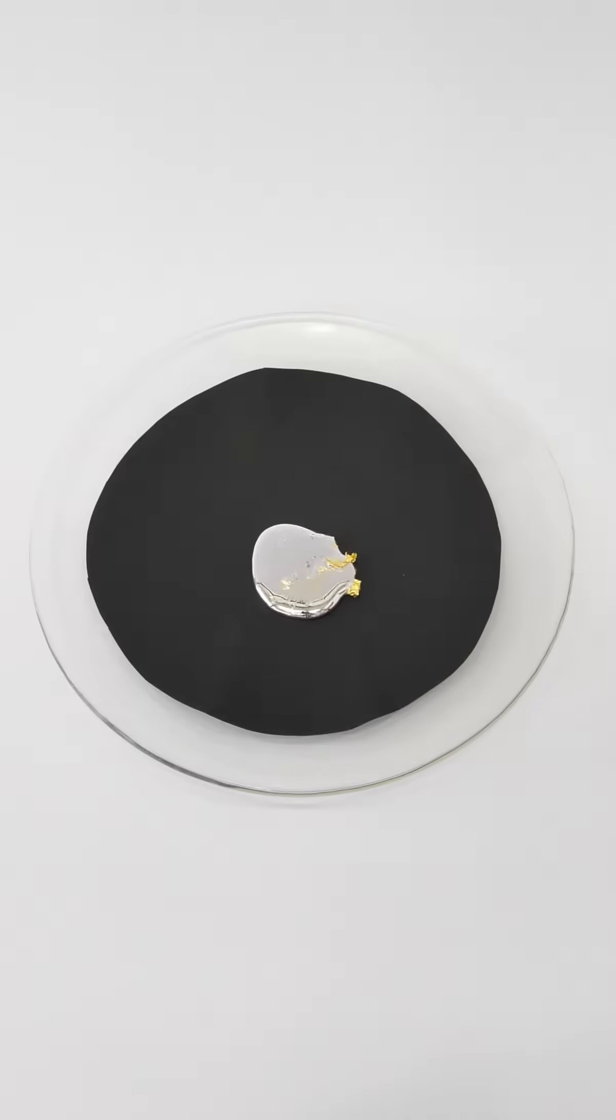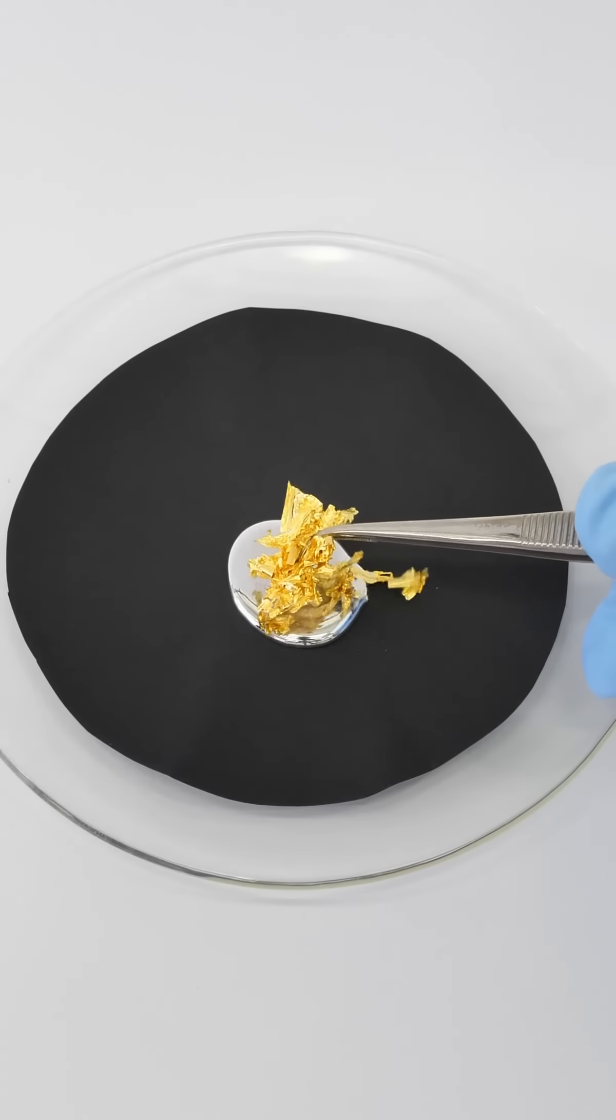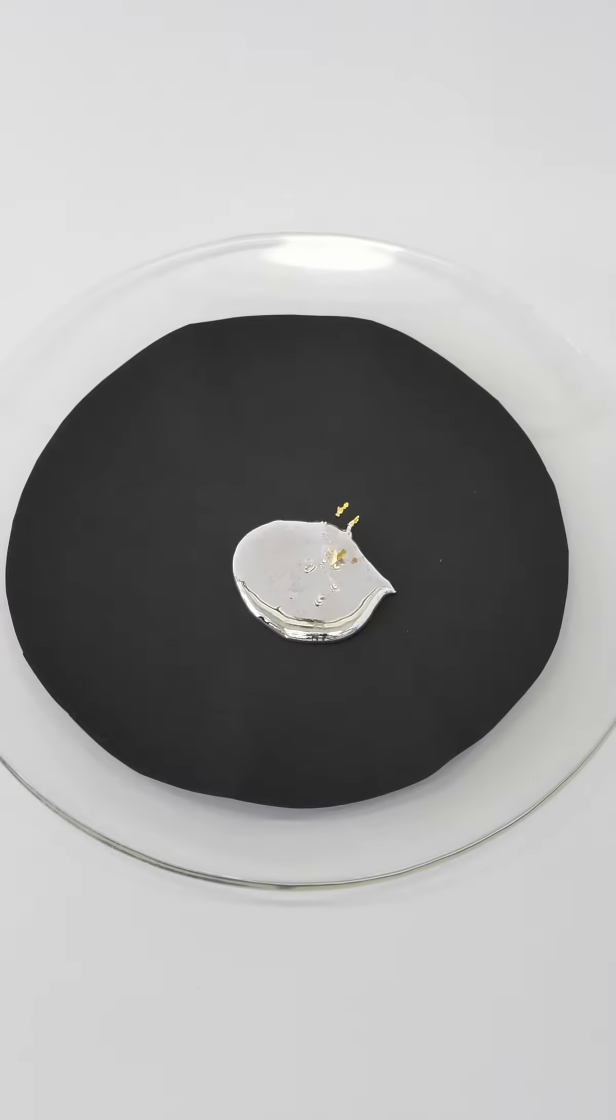Here I have some gold leaf, and it almost looks like it's being consumed by the mercury. If I keep adding gold leaf to the mercury, it dissolves just as effortlessly.